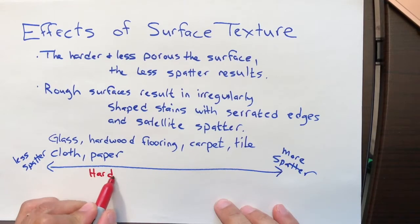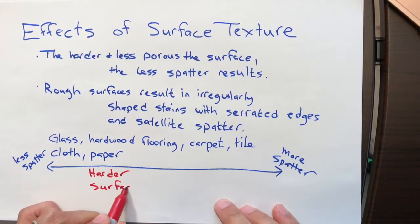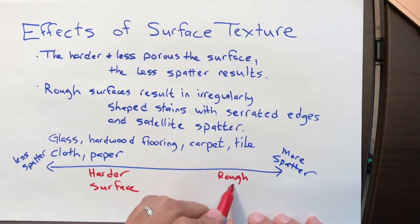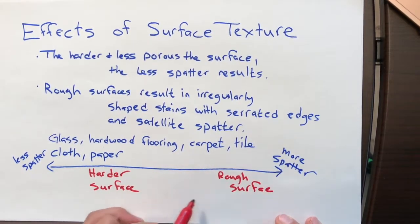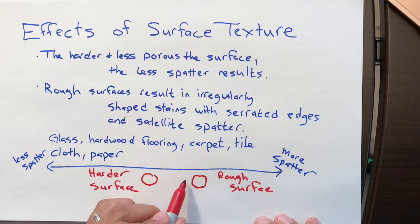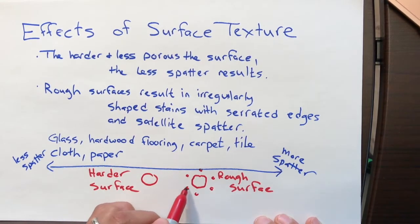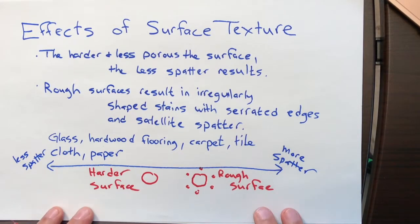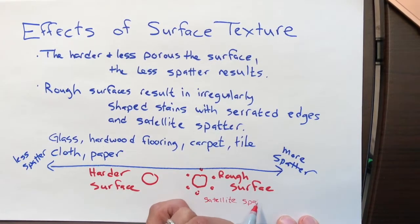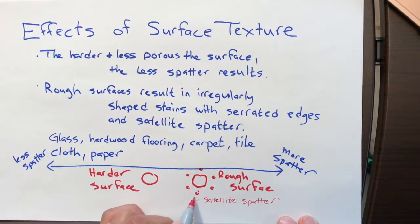Glass would definitely be on the less-spatter side, whereas cloth and paper would be on the more-spatter side. Of course, hardwood flooring and tile — that depends on how smooth the surface is.